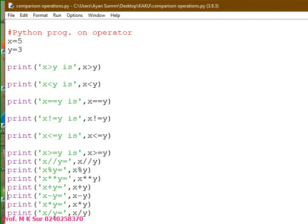Then look at the next window x slash slash y. x slash slash means it will divide but show only the quotient. If we divide 5 by 3 then we will get 1 means only the quotient.